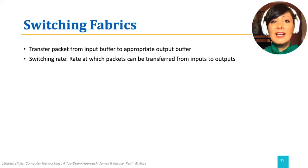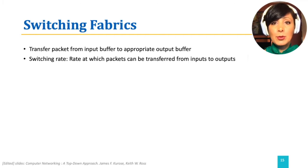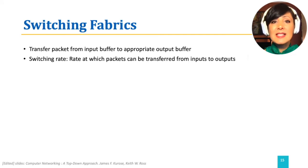However, it is desirable that our router is able to handle all incoming packets with the line rate at the input ports. Therefore, if the number of input ports is N, it is desirable that our switching fabric is capable of switching at N times the port line rate.